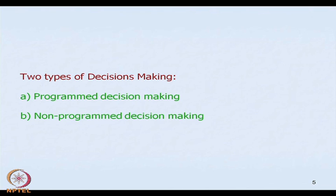There is also non-programmed decision making. In non-programmed decision making, problems arise very suddenly; they are very unique and novel, and this kind of decision making is very complex in nature. Because they are novel and unique, processes or mechanisms to solve such problems do not exist. So the person has to go in for a lot of information search, a lot of deliberation and thought, and the process is very complex.